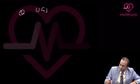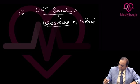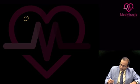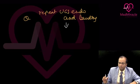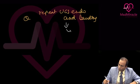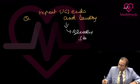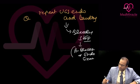If upper GI endoscopy and banding or sclerotherapy has been done but bleeding is not stopped or if there is rebleed, attempt repeat upper GI endoscopy and banding. If bleeding stops again, put the patient on beta blockers and regular endoscopic surveillance. But if bleeding is still not stopped after repeat endoscopy, proceed to the next step.